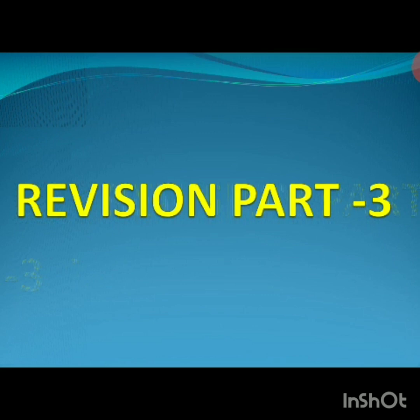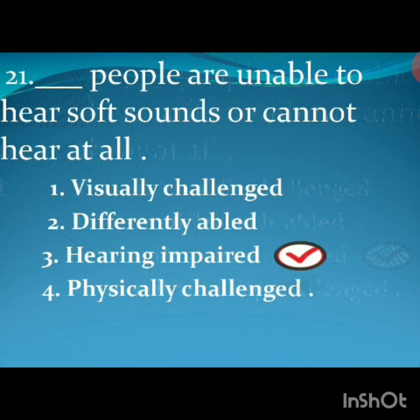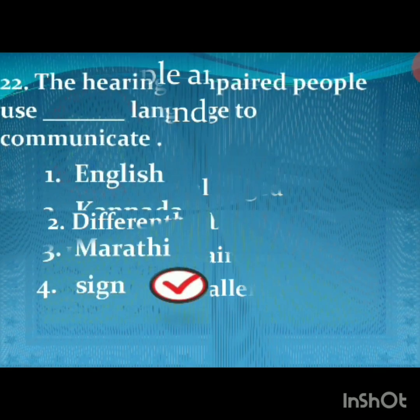Let's continue to revise — Revision Part 3, Choose the Right Option. Dash people are unable to hear soft sounds or cannot hear at all. The options are: first, visually challenged; second, differently abled; third, hearing impaired; fourth, physically challenged. The right option is the third option — hearing impaired. Hearing impaired people are unable to hear soft sounds or cannot hear at all.